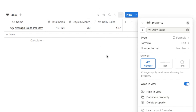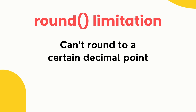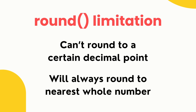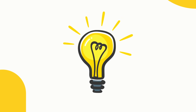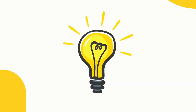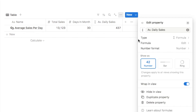The round function is useful, but the main downside is that there is no option to round to a specific decimal place — it always rounds either up or down to the nearest whole number. Don't worry though, there is a trick we can use to modify the output to round to a certain decimal place.